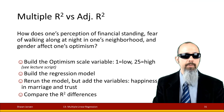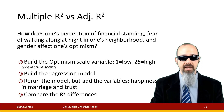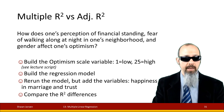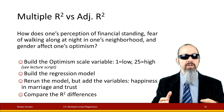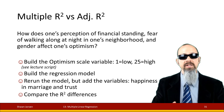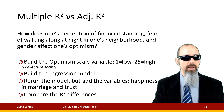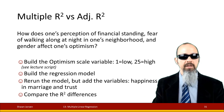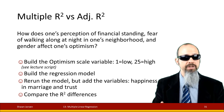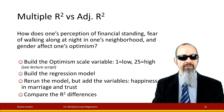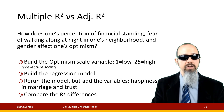Let's close out with a brief example. The example question is: how does one's perception of their financial standing, their fear of walking alone at night in their neighborhood, and their gender affect their optimism? We're going to use the General Social Survey 2016 data, with an optimism scale from 1 (low) to 25 (high) as the dependent variable, and then later add happiness, marriage, and trust as additional predictors.